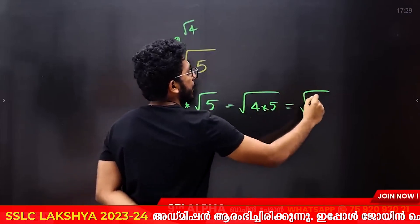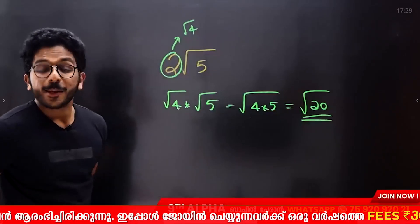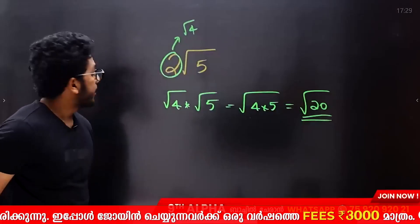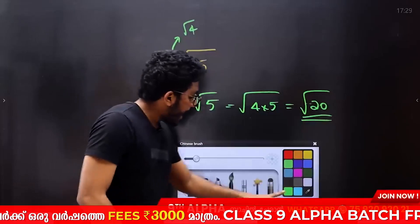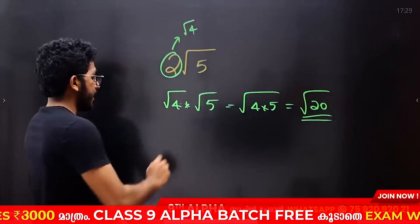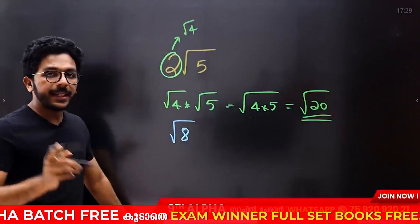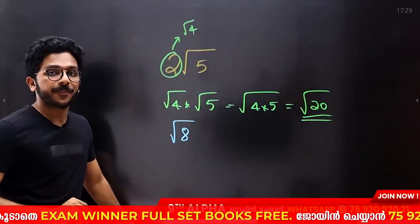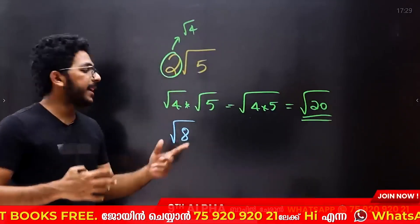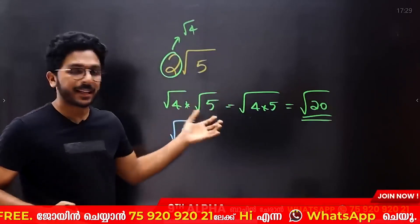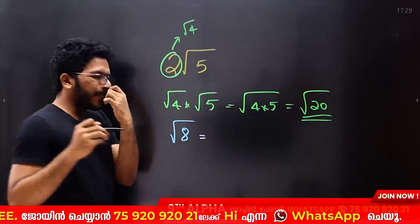Then root 4 into root 5 equals root 20. Root 20 and root 5 combined. Now if you have root 8, you can simplify it. How? If we have a multiplication rule, we can reverse it. Root 8 can be written as root of 2 into 4.